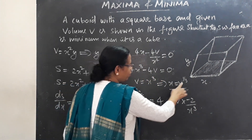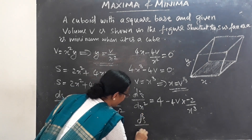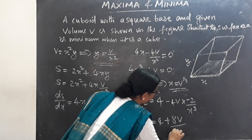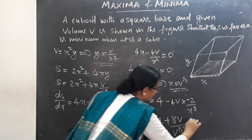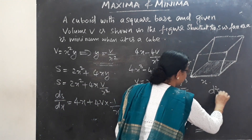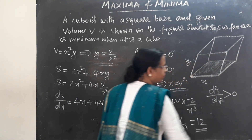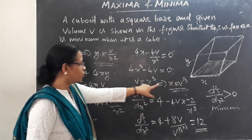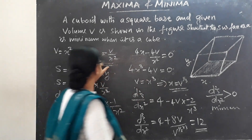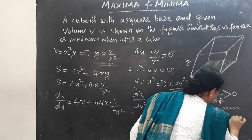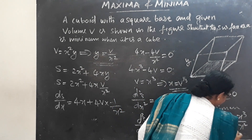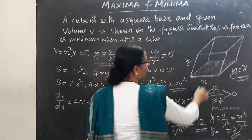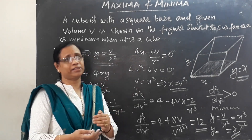The second derivative d²S/dx² equals 4 plus 8V/x³. Substituting x equals V^(1/3) gives a value greater than zero, confirming minimum surface area. When x equals V^(1/3), y equals V/x² equals x, so y equals x — meaning the box is a cube with minimum surface area.